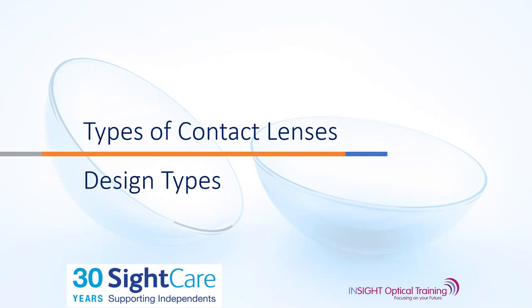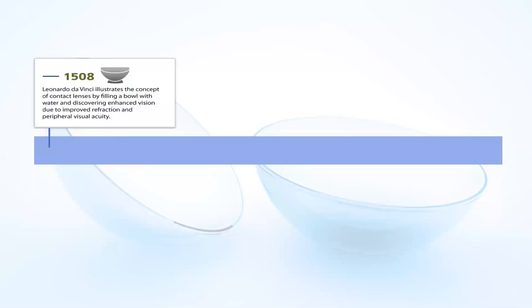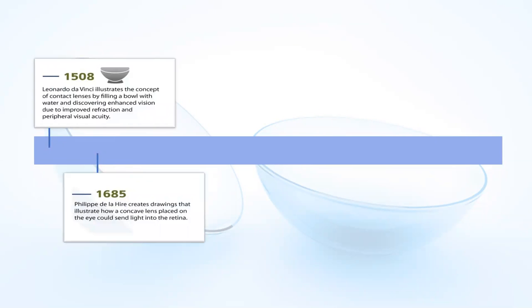Let's talk about the history of contact lens types. The first idea of contact lenses was around 1500, when Leonardo da Vinci stuck his head in a bowl of water and realised it affected his vision, leading to the thought that it could be used to help people see better. About 180 years later, technical drawings were done by Felipe de la Hare, looking at how curved lenses worn on the eye could correct vision. This was still just theory on paper.